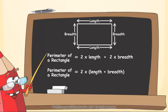To find perimeter, first add length and breadth, and then multiply by two.